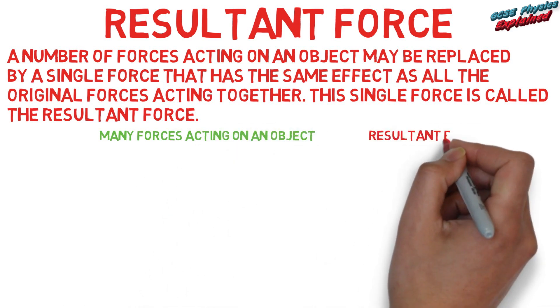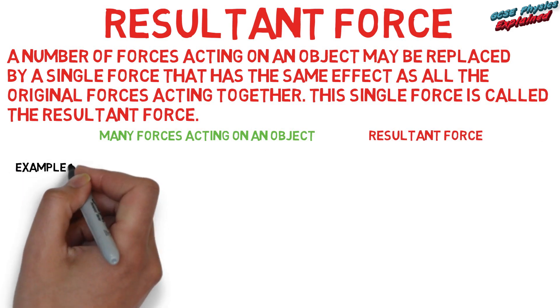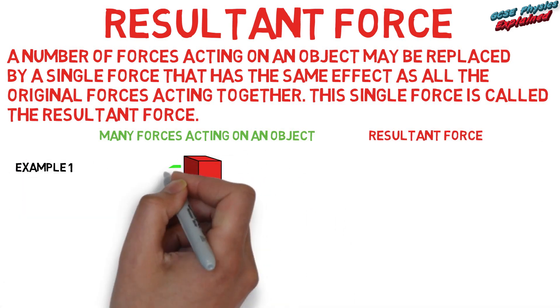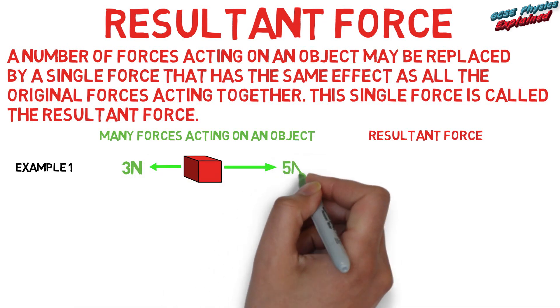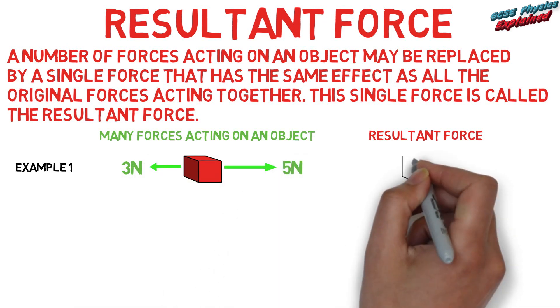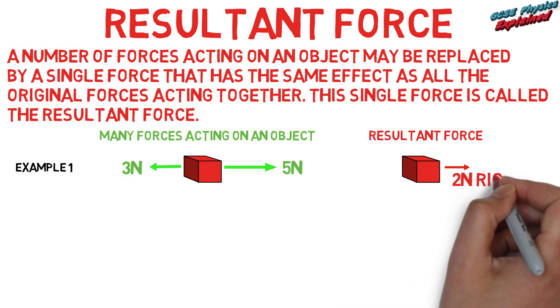Many forces acting on an object gives a resultant force. Example 1: 3 newtons left, 5 newtons right. Resultant force: 2 newtons to the right.